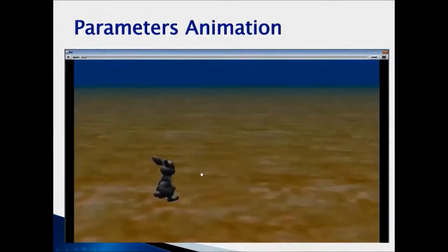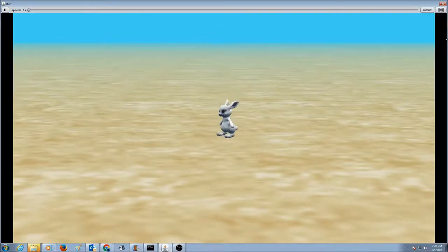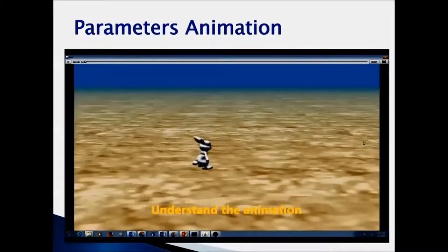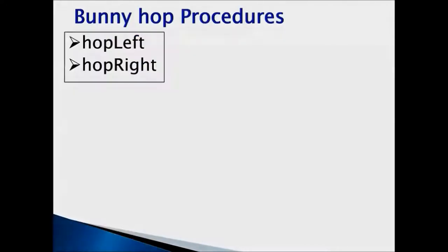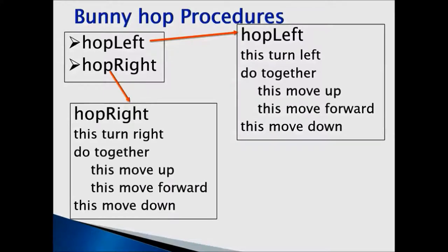Let's watch the animation. Bunny is hopping left, bunny is hopping right, and he is spinning twice and then spinning once. When we do this animation, the bunny is hopping left and hopping right. So when we write procedures for it, we are going to create a hop left procedure and a hop right procedure.